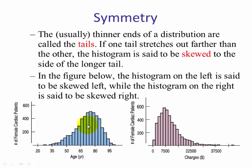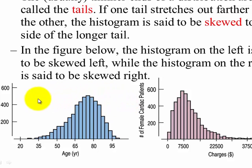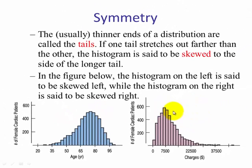This is an example of what we call skewed left. If we find the peak and draw a line out, this would be the left tail and this would be the right tail — so this is skewed left because the left tail is longer. This would be an example of skewed right, where the right tail is longer than the left tail.